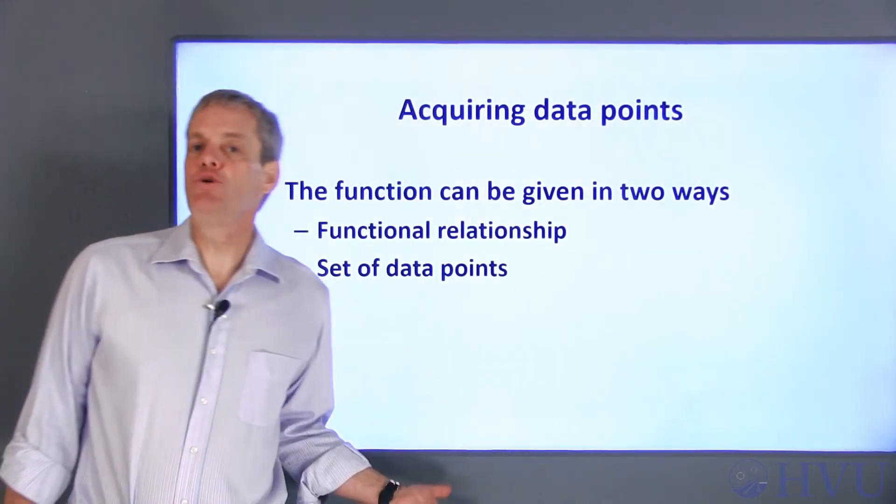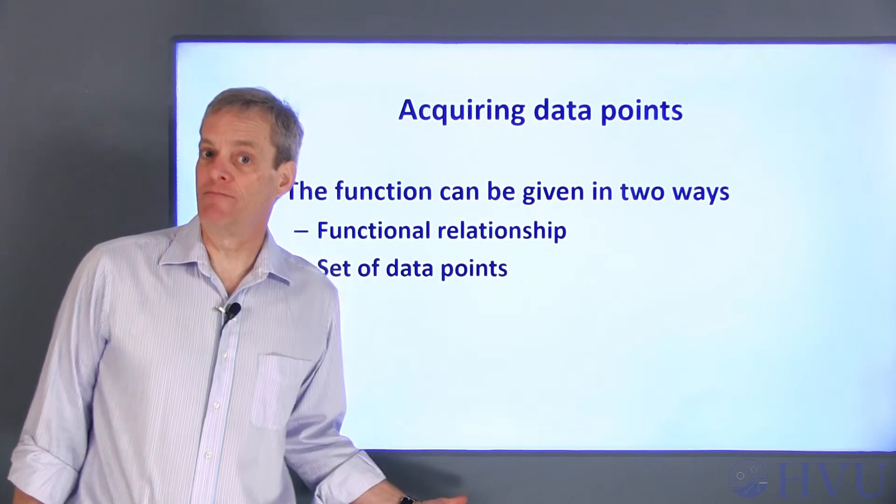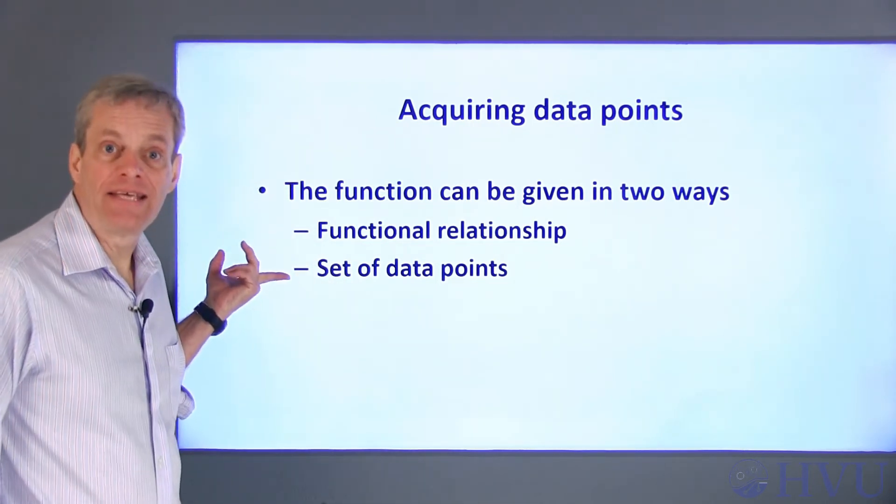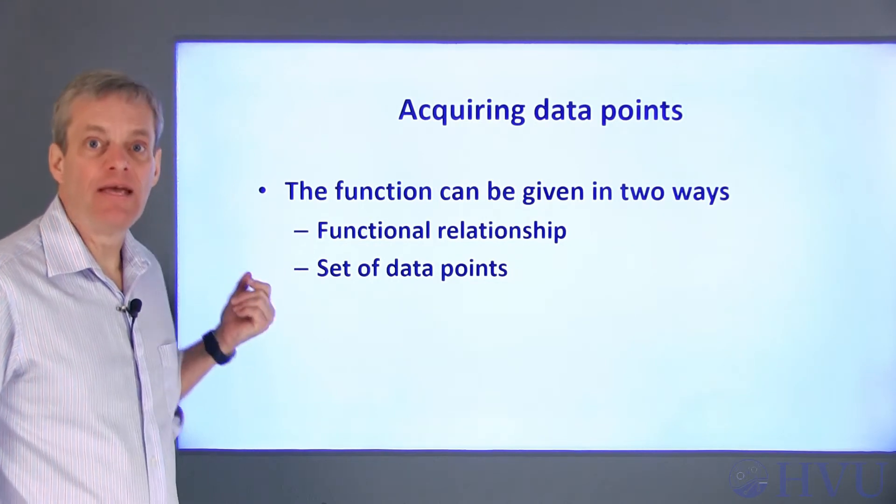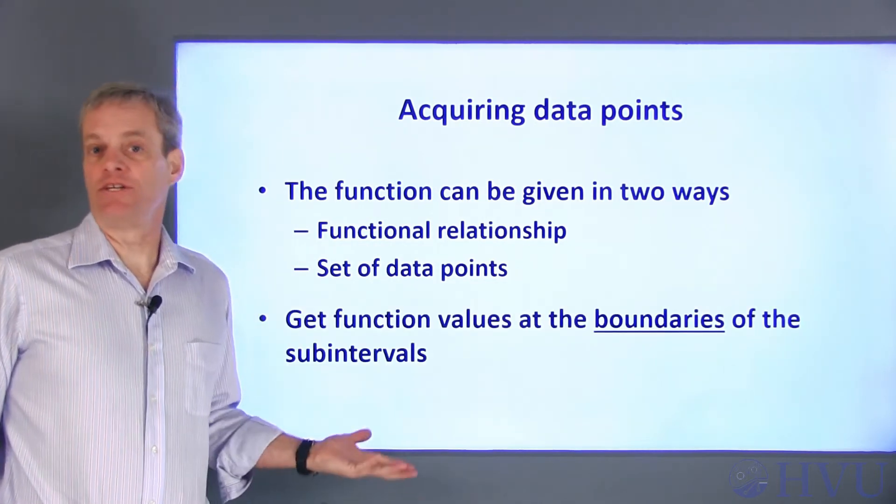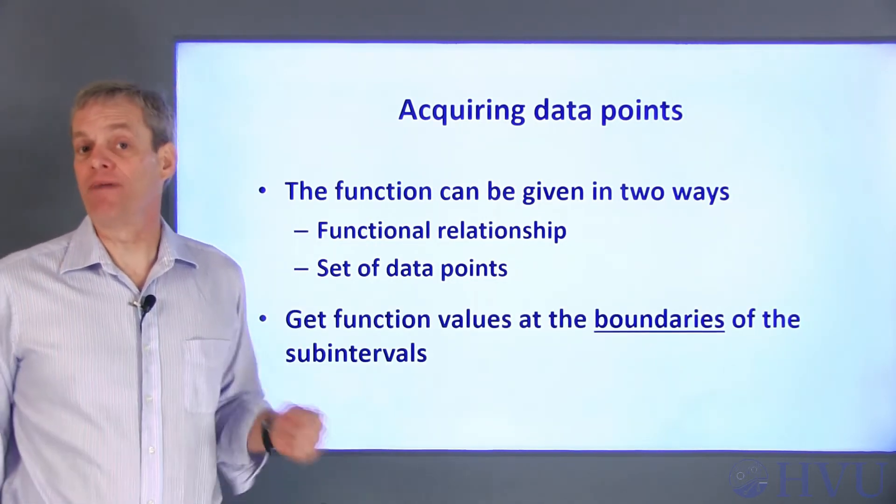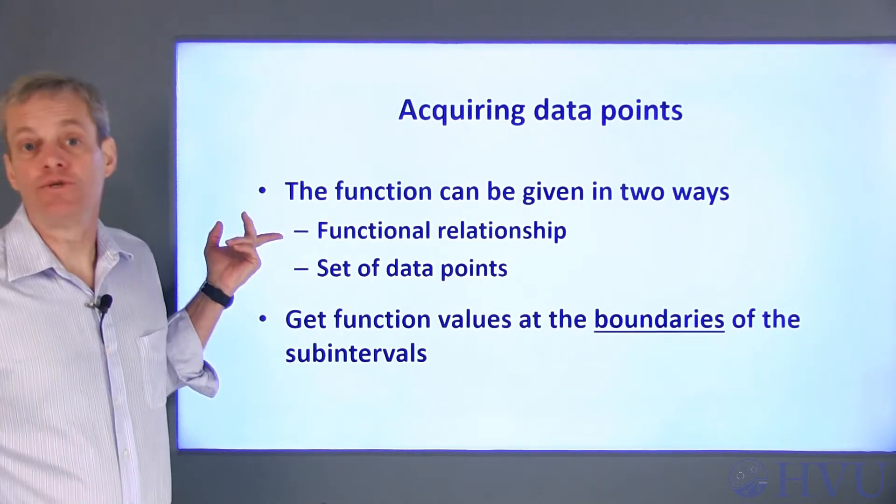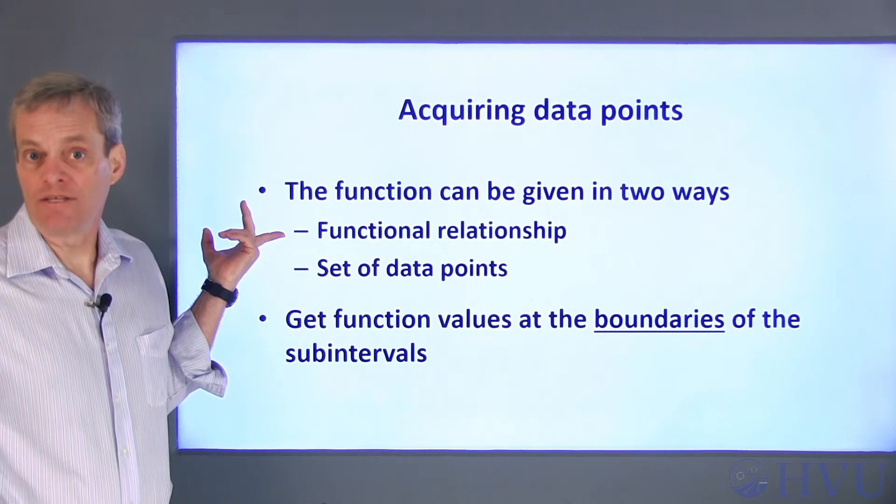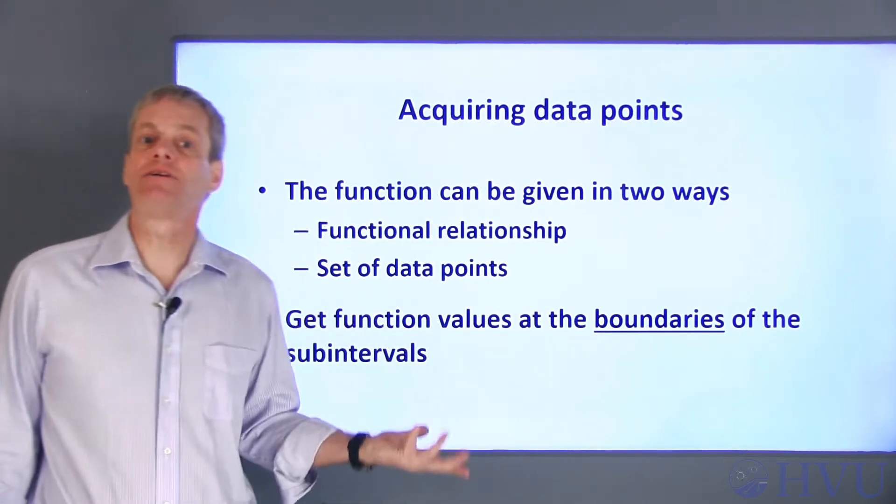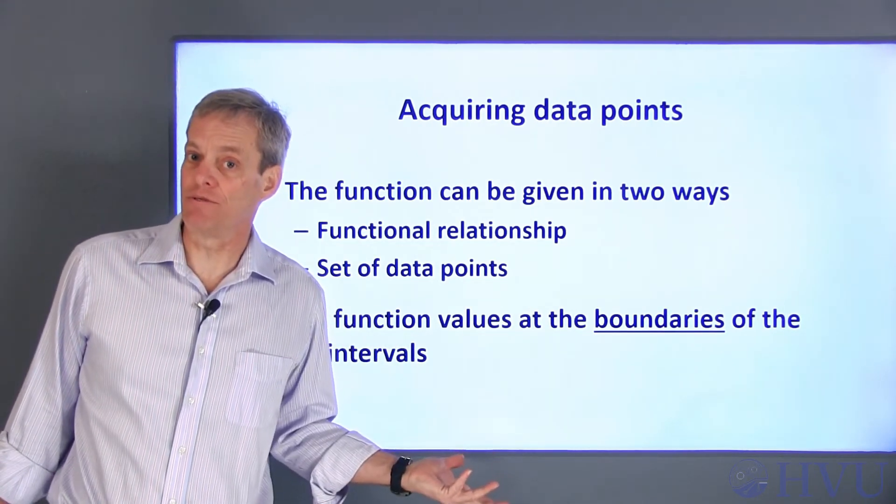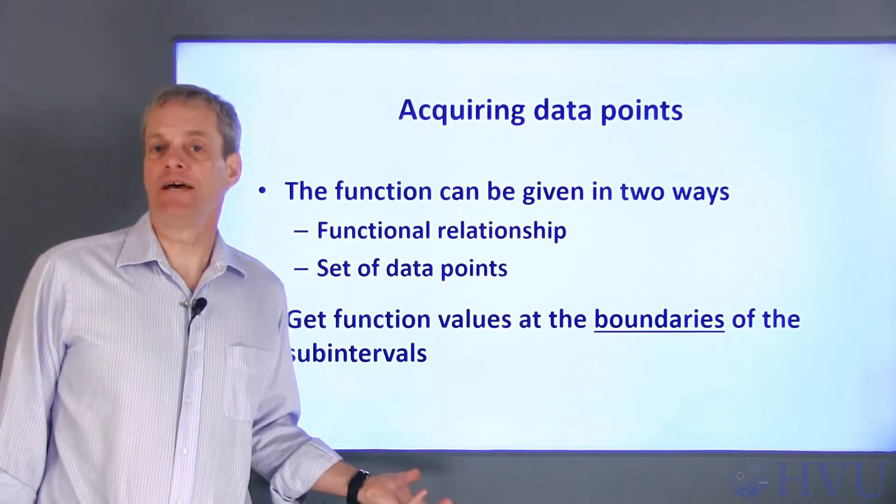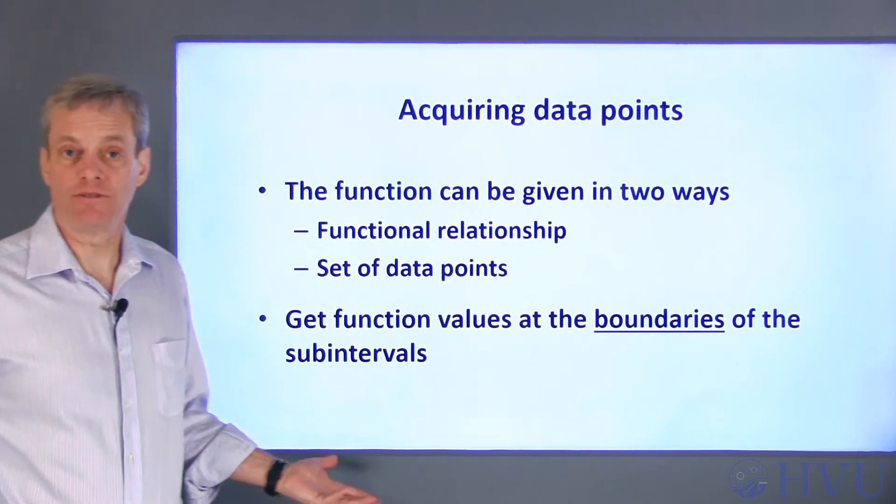We have two possible ways that our function can be defined: by a functional relationship or by a set of measured data points. Either approach allows us to determine the value of the function at the boundaries of the subintervals. If the function is given, we can choose any values of x we want to define the subintervals and then calculate the corresponding function values. If we are provided with data points, we already have the x and y values of the data points to define the subintervals.